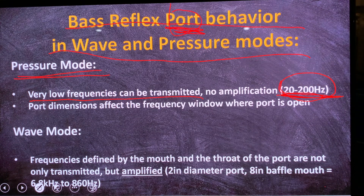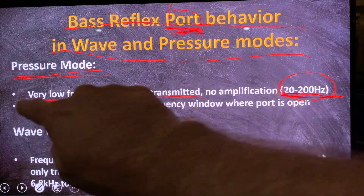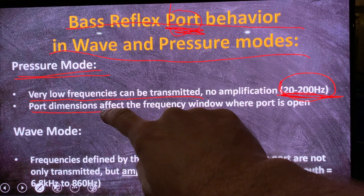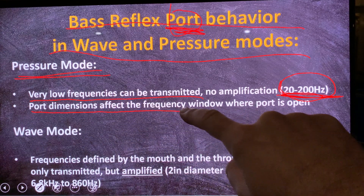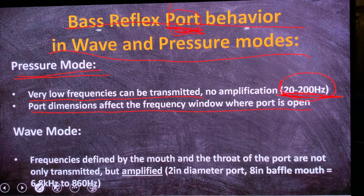The lower we go in frequency, the deeper we go in pressure mode, which means the speed at which the air exits the port will be higher and higher. There's also a consideration that the dimensions of the port affect the frequency window where the port is open — because the port is basically a horn.